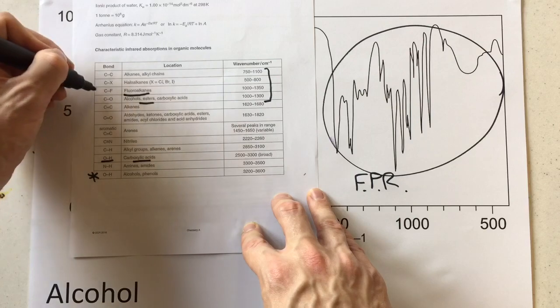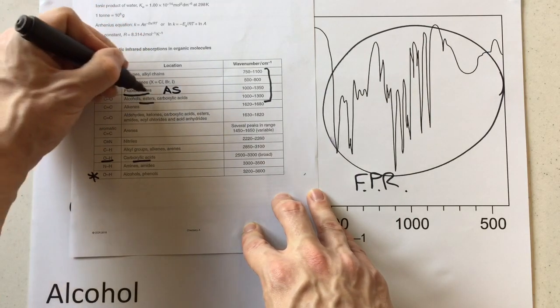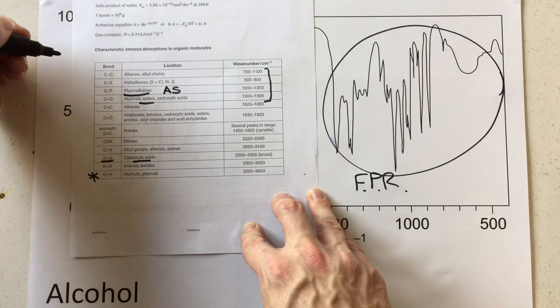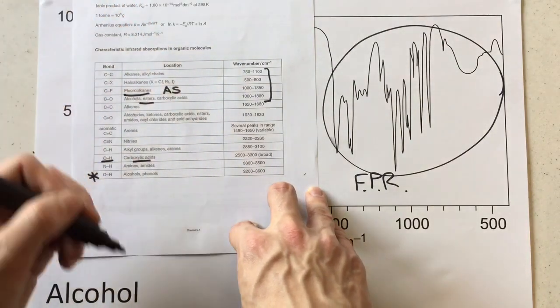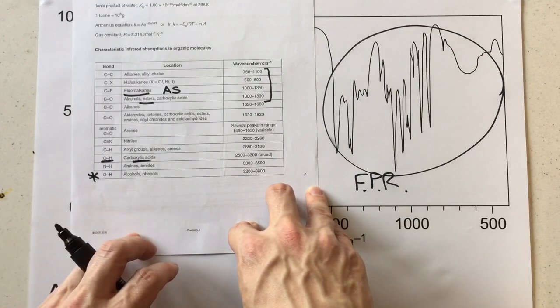Now fluoroalkanes, they're on the AS spec, and this actual peak region just here was never on the old data sheets. They've not used it yet at the time of publishing this video, so we expect that they may actually get you to predict something like that in the exam.